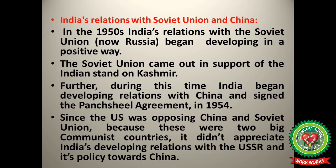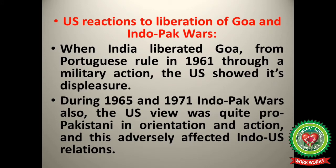India's relations with the Soviet Union began developing positively in the 1950s; the Soviet Union came out in support of India's stand on Kashmir. Further, India began developing relations with China and signed the Panchsheel Agreement in 1954. Since the USA was opposing China and the Soviet Union as two big communist countries, it didn't appreciate India's developing relations with the USSR and its policies towards China.